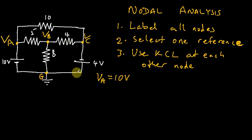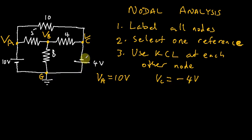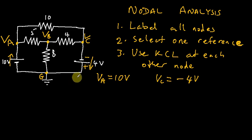Similarly, if the reference is 0V and we move in the direction of node C, the only thing in that branch is a voltage source. Because of the way the voltage source is drawn — positive terminal downward — we go against the voltage source and acquire a negative voltage of 4V. So VC equals negative 4V.